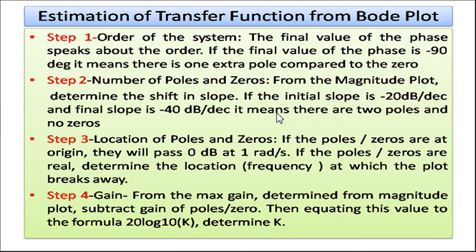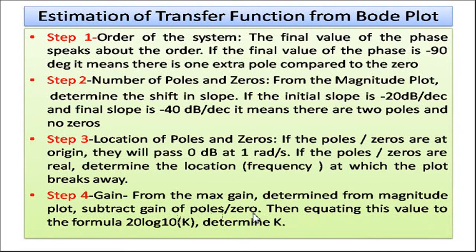The second step is to determine the number of poles and zeros. From the magnitude plot, determine the shift in slope. If the initial slope is minus 20 dB/decade and the final slope is minus 40 dB/decade, it means there are two poles and no zeros. The third step is the location of poles and zeros — poles or zeros at the origin will pass 0 dB at 1 rad/s, and real poles/zeros are found at the frequency where the plot breaks away. The fourth step is the gain: from the maximum gain in the magnitude plot, subtract the gain contributions of poles and zeros, then equate to 20 log₁₀(K) to determine K.